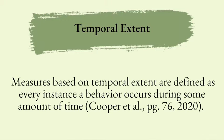Measures based on temporal extent are defined as every instance of behavior that occurs within some amount of time — all of this information comes right from the Cooper book, our ABA Bible. Specifically, we need to discuss measuring behaviors that have an observable start and observable end, and for this we use duration as a method for measurement.